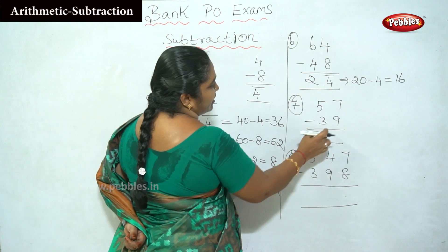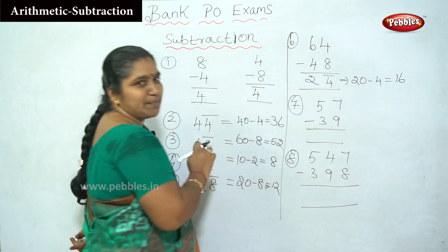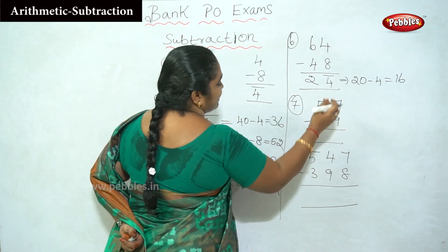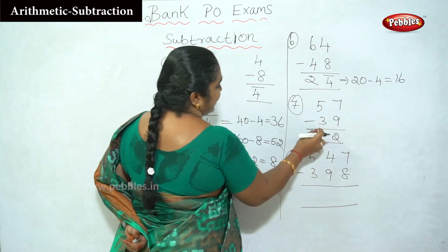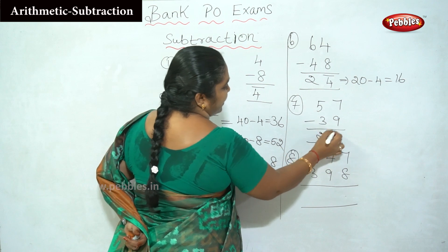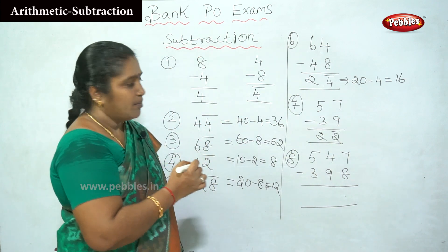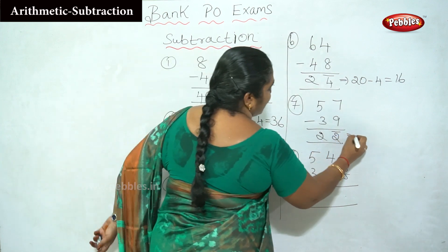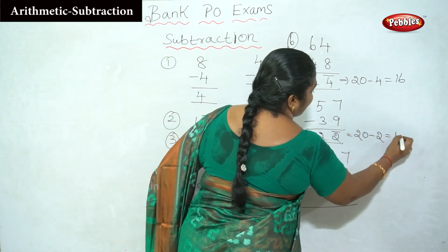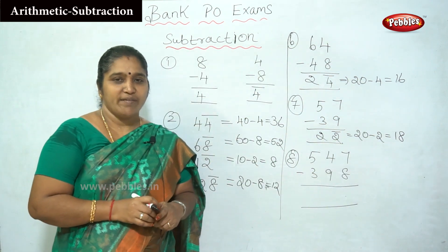For example, 57 minus 9: we subtract 9 from 7 — but 7 is less than 9, so we get a bar on 2 (that is, 10 minus 9 is 1, and 5 minus 1 is 4). Wait — let us check: 57 minus 9 equals 48. The same answer is confirmed.